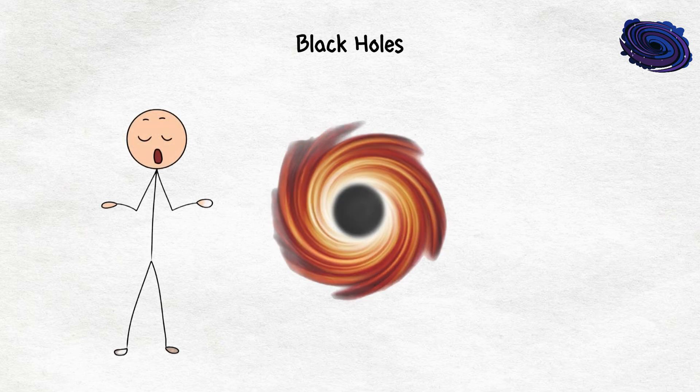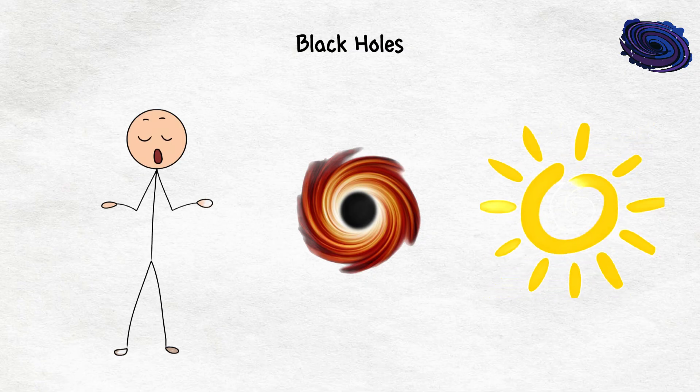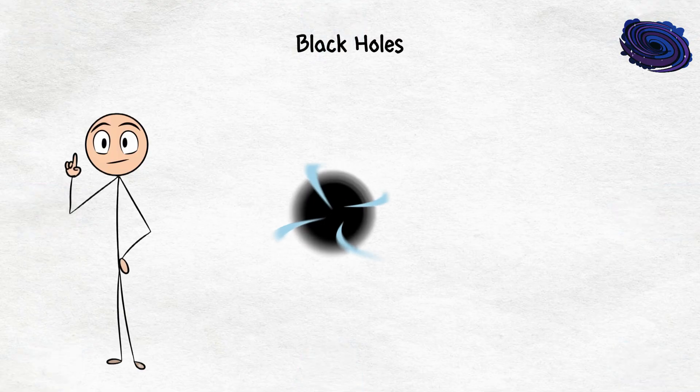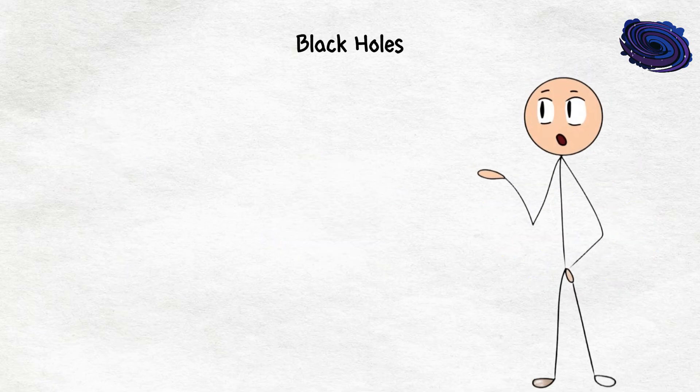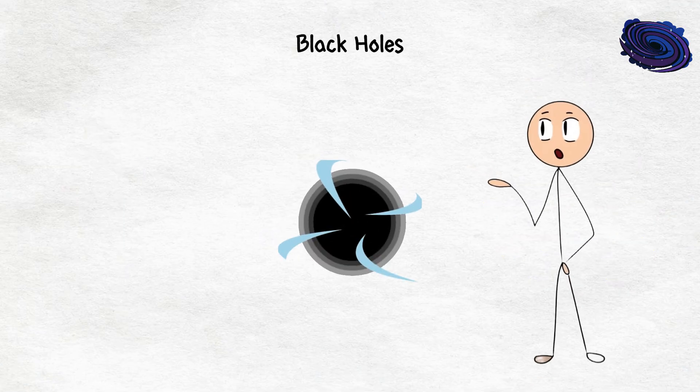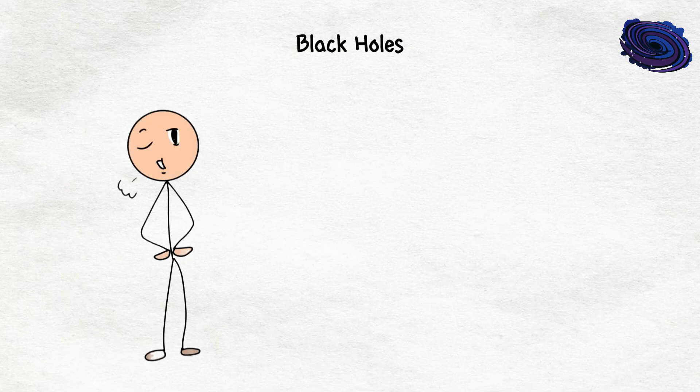There are two types. Stellar black holes, which are formed when massive stars collapse, and they are anywhere from 3 to 1,000 times the size of our sun. Then, you have got the supermassive black holes, which are millions or even billions of times bigger than our sun. Oh, and fun fact, there's a supermassive black hole chilling right in the center of our galaxy, just casually gobbling up chunks of the Milky Way. No big deal.